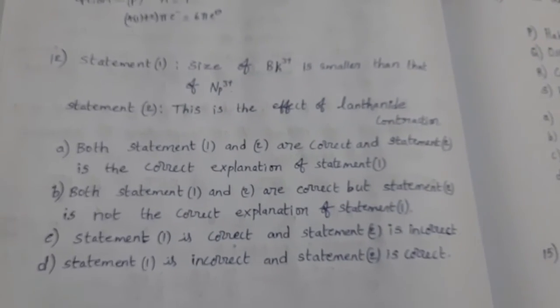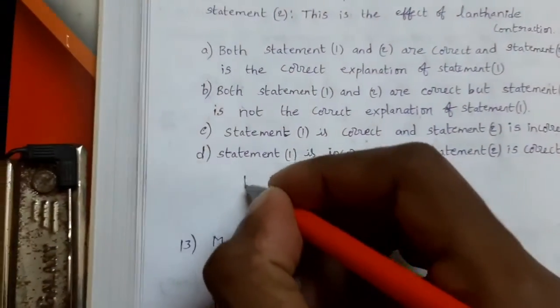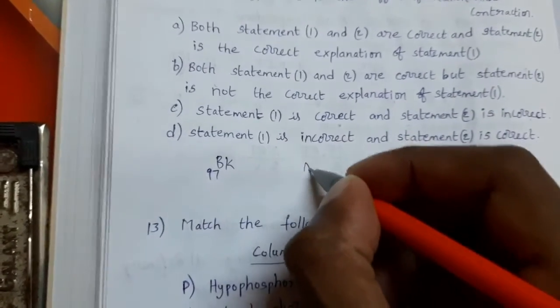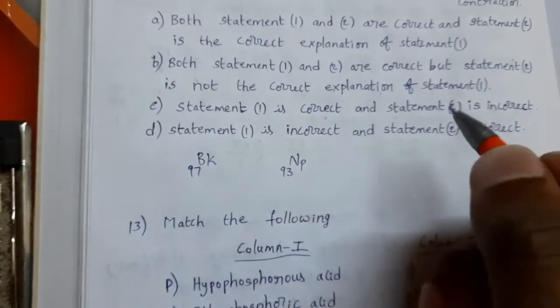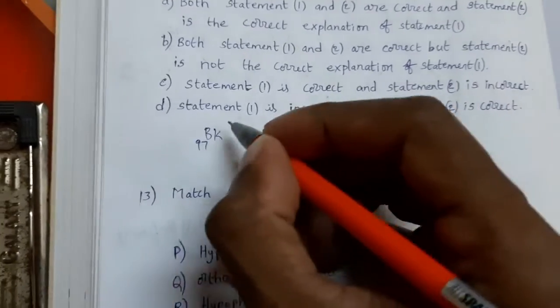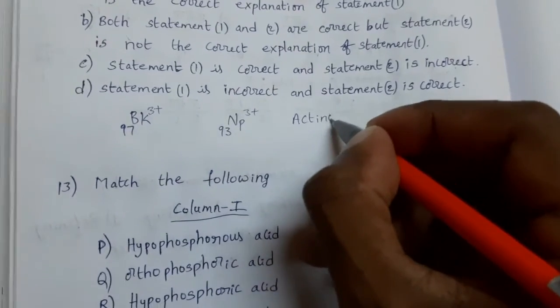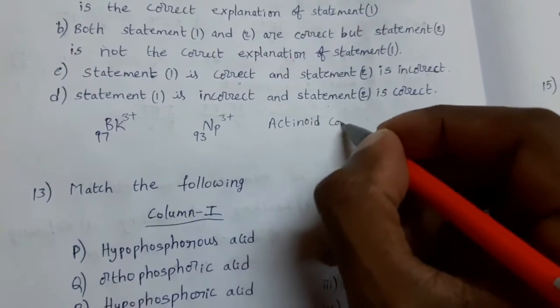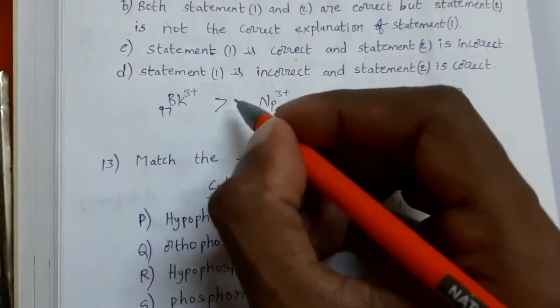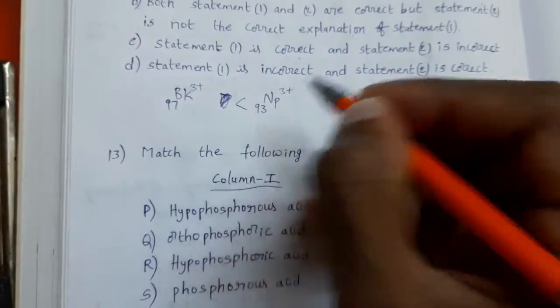What is the option? See this. In this, berkelium atomic number 97, neptunium atomic number 93. Generally, we expect it is bigger in size than this one. But here due to actinoid contraction, its size is smaller than this one.